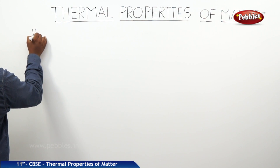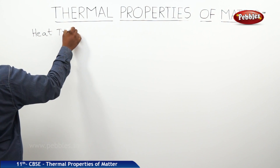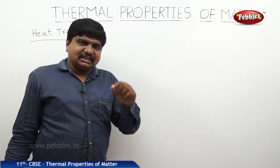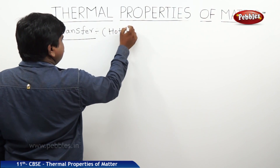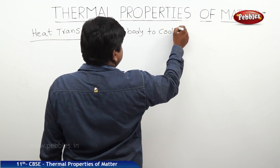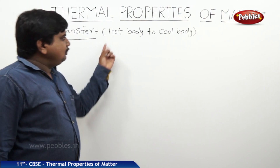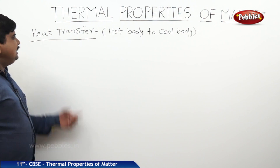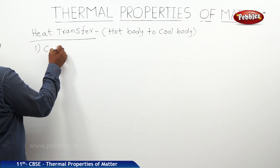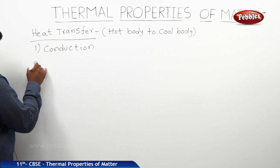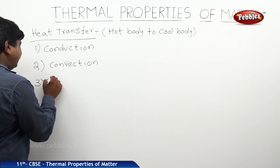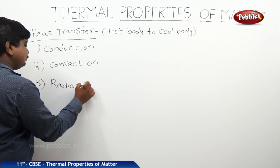We are discussing heat transfer. Heat energy always transfers from a hot body to a cool body — hot body means which is at high temperature, cool body means relatively at low temperature. The relative case between the two bodies is very important. There are three different types of heat transfer: the first one is conduction, the second one is convection, and the third one is radiation.